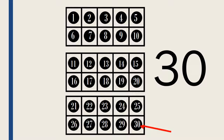These three 10 frames show the number 30. Point to the number 30. Now it is your turn to make the number 30 with 10 frames.